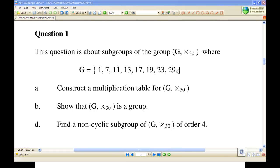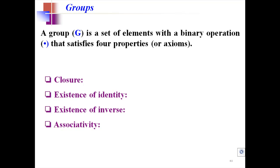To do this, let's recall what is a group first. A group G is a set of elements with a binary operation that satisfies four properties or four axioms: first, closure, then existence of identity, then existence of inverse, and associativity.